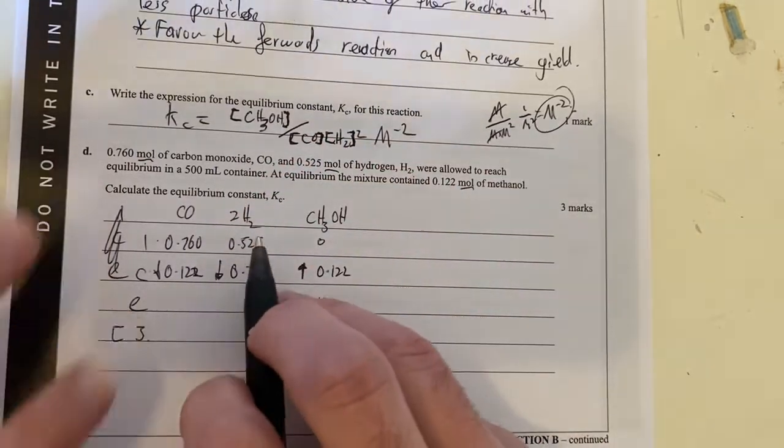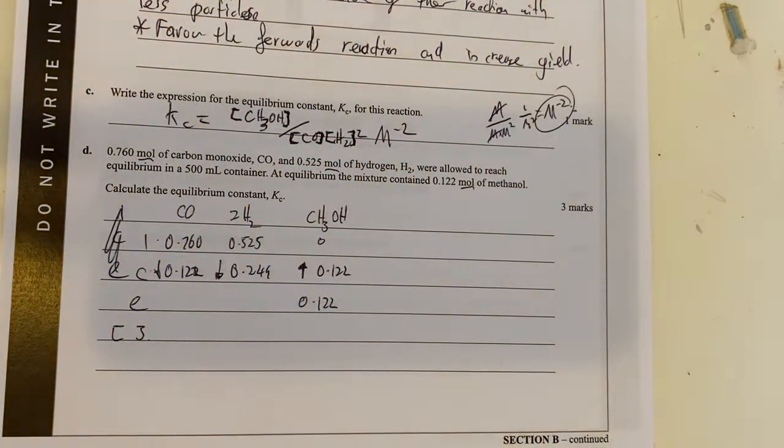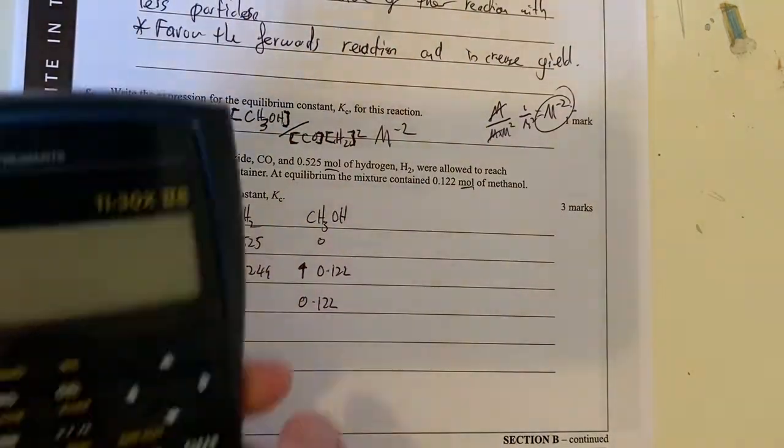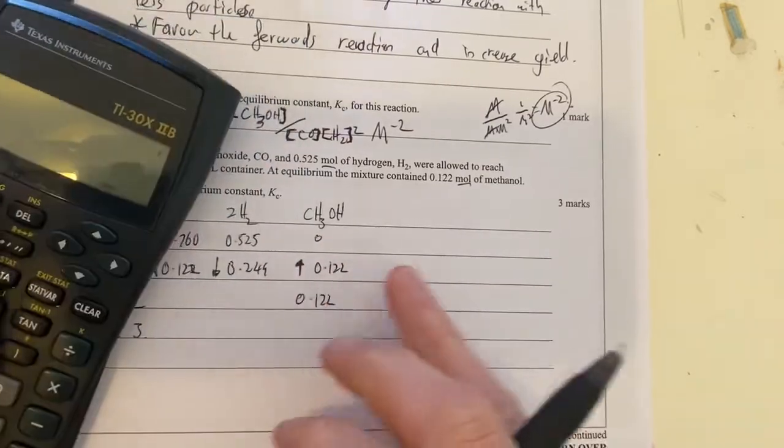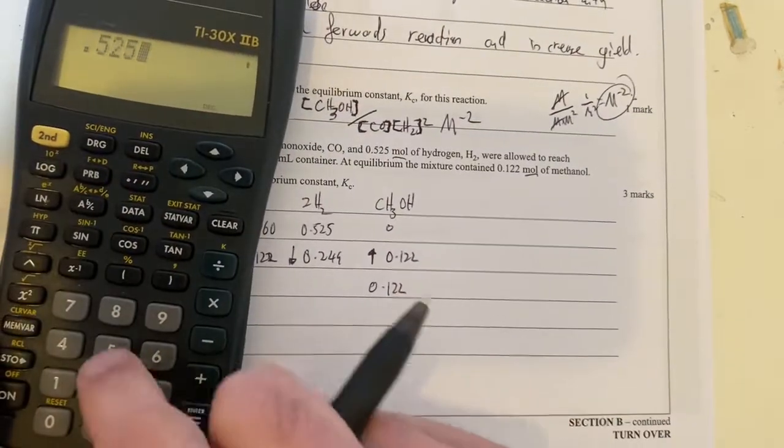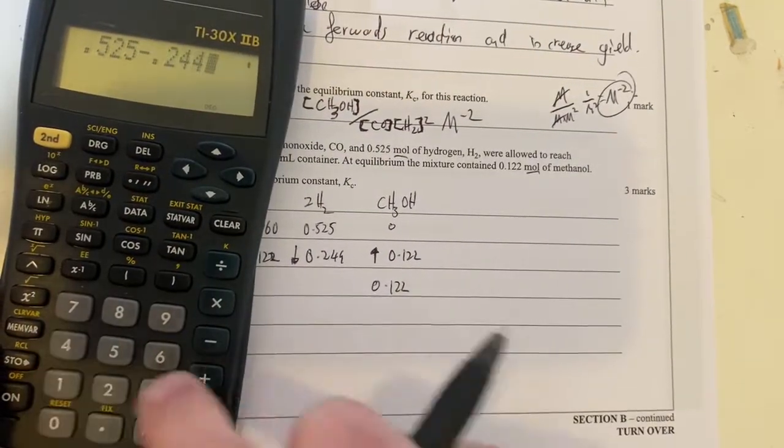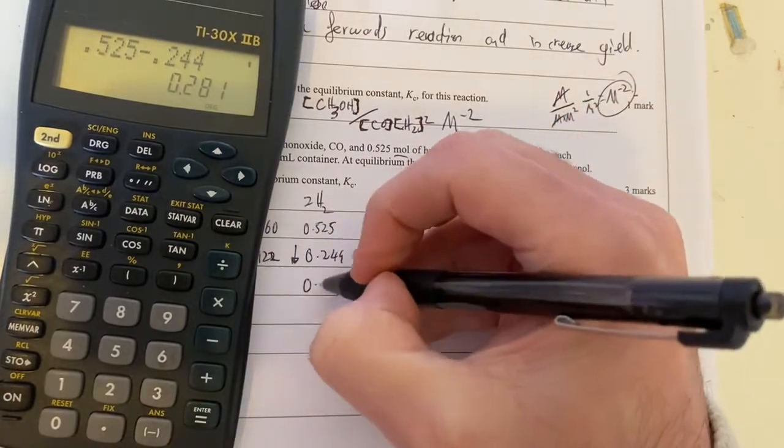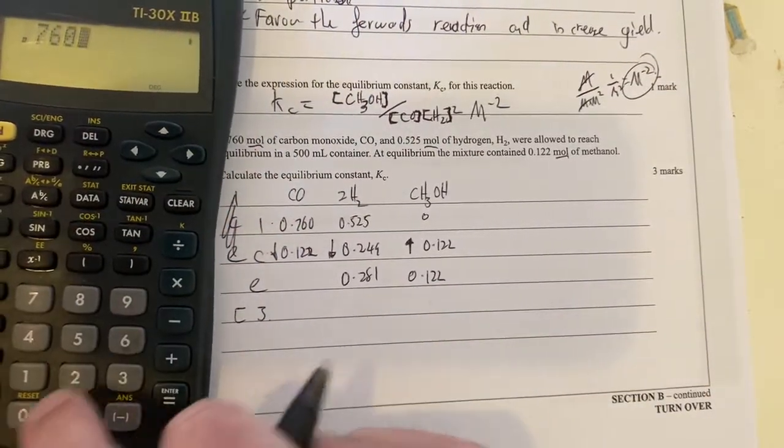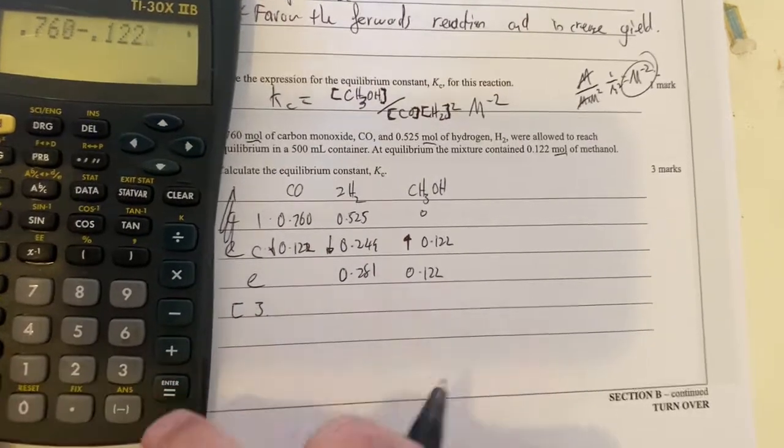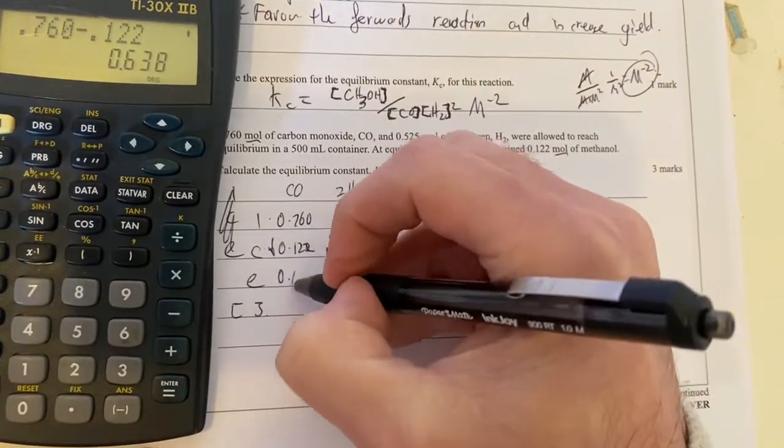So therefore, I can get my trusty calculator, which is here, and turn it on. Clear, clear. And I've got 0.525 take away 0.244 gives me 0.281. And then 0.760 take away 0.122 gives me 0.638.